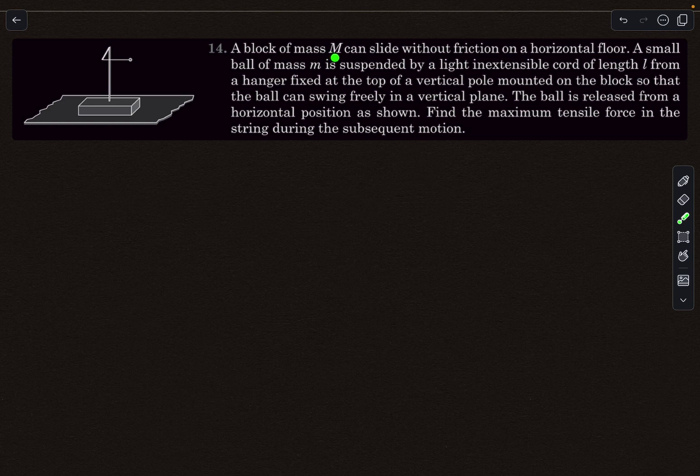We have a block of mass capital M that can slide without friction on a horizontal floor. A small ball of mass small m is suspended by a light inextensible chord of length L from a hanger fixed at the top of the vertical pole, and the ball can swing freely in a vertical plane. The ball is released from a horizontal position as shown. We have to find the maximum tensile force in the string during the subsequent motion. Give this problem a good try and then you can check out the solution.